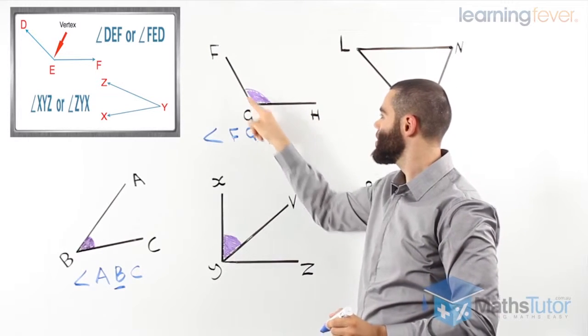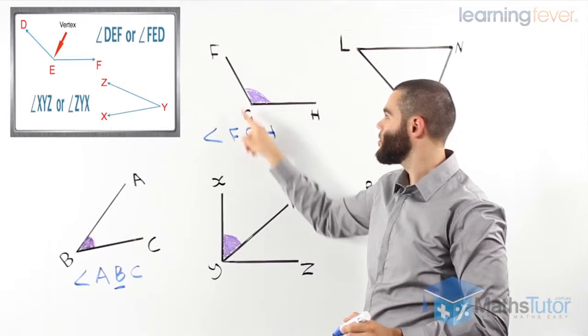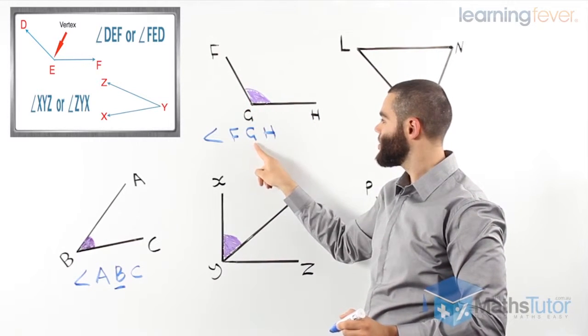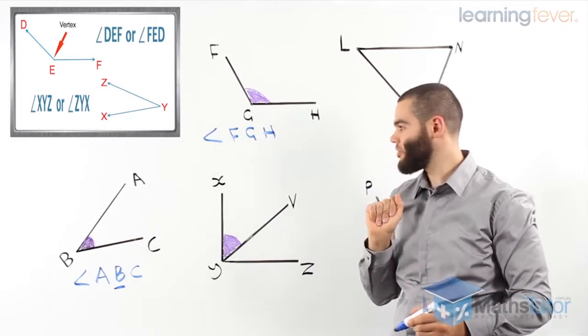Or angle HGF. No problem. Angle FGH. The vertex, there it is, it's in the middle. Very important for us to see.